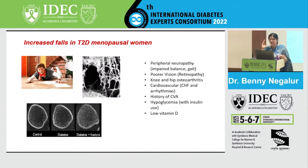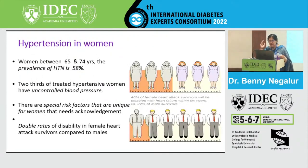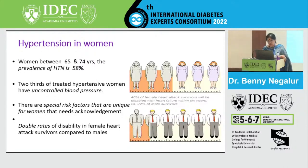Hypertension is much higher in women compared to men — for every one man, there are at least two women with hypertension. Among those who have recovered from ischemic heart disease, the risk of heart failure in women is twice that of men. At every stage, the impact of diabetes is much higher in women compared to men.